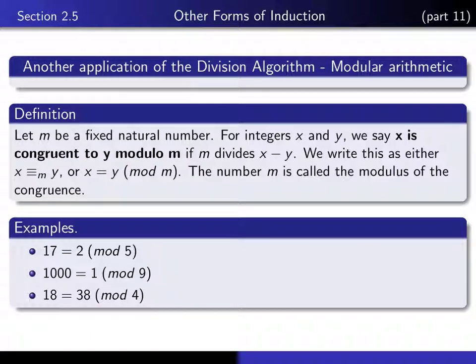Here's the fundamental definition. We let m be a fixed natural number and give ourselves integers x and y. We say that x is congruent to y modulo m if m divides the difference x minus y. And we use either this notation or this notation to indicate that x is congruent to y modulo m.